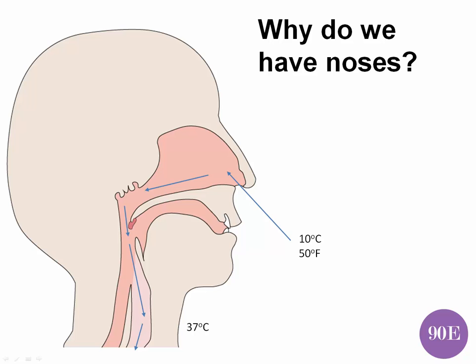But, bugs are really, really small. Bacteria and viruses are so, so small, and they can get through the nasal hair. So we need another defence system, and that other defence system is snot. Now let's have a look at how that works.